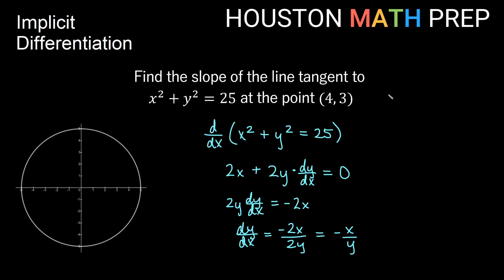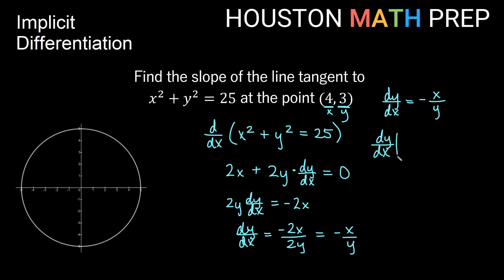What you'll notice is that with implicit differentiation, we didn't just get an expression involving x — we got an expression involving both x and y, and that happens often. So when I go to plug in, I won't just be plugging in an x value; I'll also be plugging in a y value. If I plug in x equals 4 and y equals 3 — written as dy/dx evaluated at (4, 3) — plugging in 4 for x and 3 for y gives us negative 4 thirds.